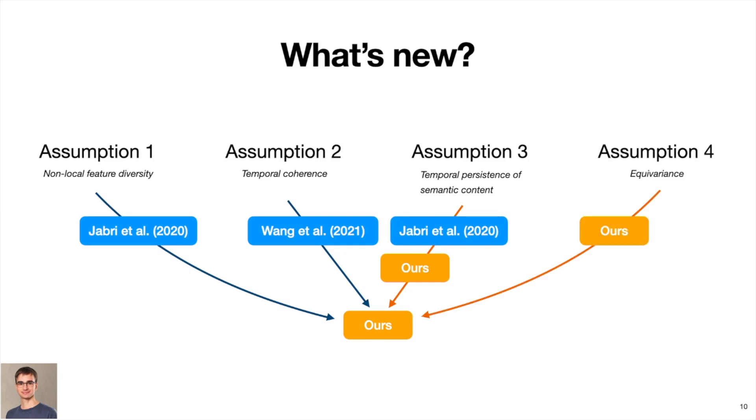Uniting these assumptions in a novel framework, we find that we can efficiently and effectively learn dense semantic feature representations in a fully convolutional regime without falling prey to degenerate solutions.